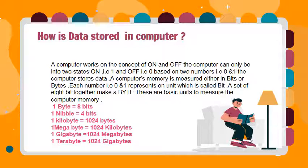Computer memory is measured in either bytes or bits. A byte consists of 8 bits. Other units for measuring computer memory are: 1 byte is equal to 8 bits, 1 nibble is equal to 4 bits, 1 kilobyte is equal to 1024 bytes, 1 megabyte is equal to 1024 kilobytes, 1 gigabyte is equal to 1024 megabytes, and 1 terabyte is equal to 1024 gigabytes.